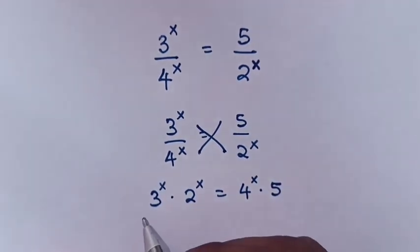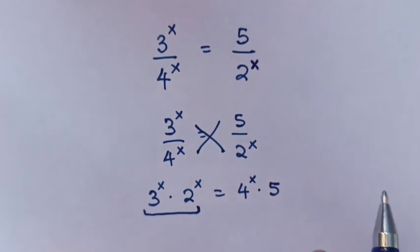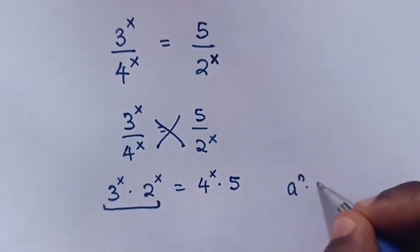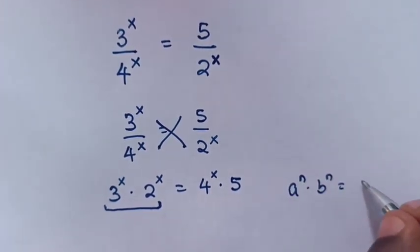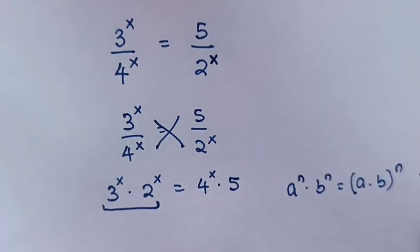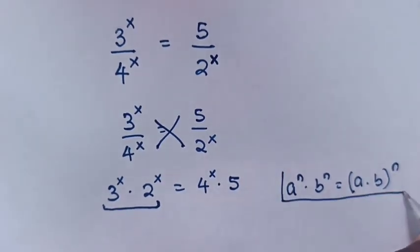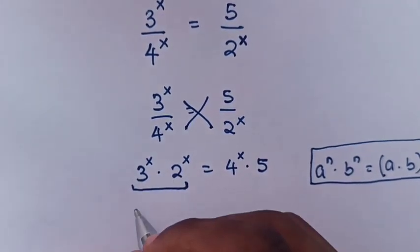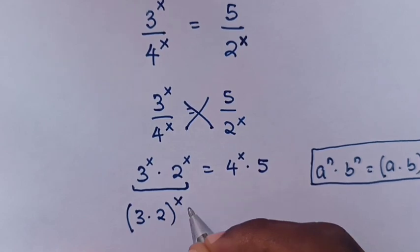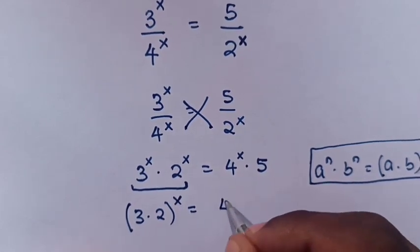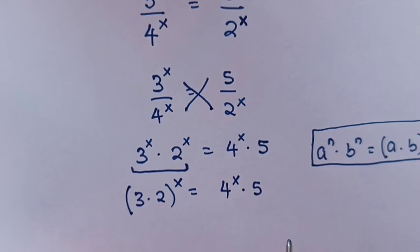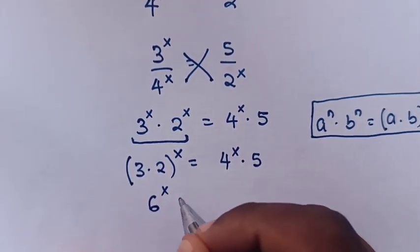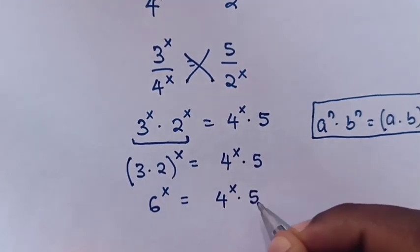From here, because this is multiplication of exponents with the same powers, we'll apply the rule that a^n times b^n is equal to (a times b)^n. So in our equation, it will be (3 times 2)^x is equal to 4^x times 5. Since 3 times 2 is 6, it will be 6^x is equal to 4^x times 5.